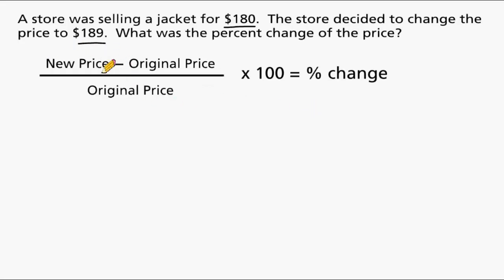We're going to start by stating what the new price is, which is $189, and we're going to subtract from it the original price, which was $180. And then we have to take that amount and divide it by the original price, which was $180. Now if we just solve this part of our equation, this will not give us the percent change. This will just give us the decimal value of that change, and we have to convert that decimal into a percentage by multiplying by 100.